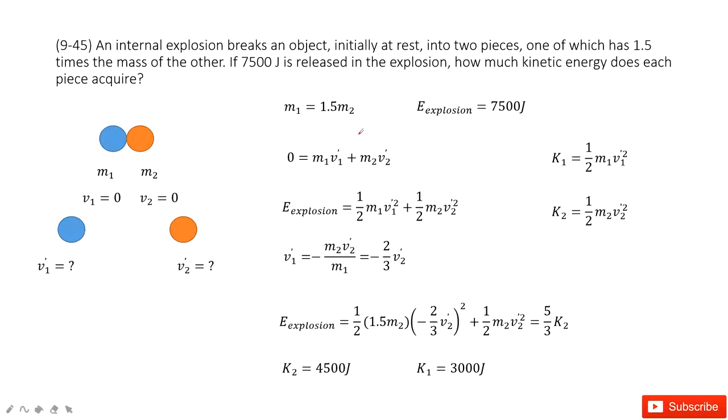Welcome to my channel. I'm Zhang Xinjie. Let's look at problem 45 in Chapter 9. Chapter 9 is about linear momentum. In this one, you can see we have one object, and then it breaks into two parts.